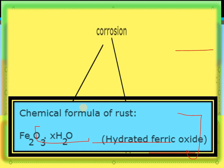What is the rusting formula? The chemical formula of rust — because it is rusting of iron, it will be Fe₂O₃·xH₂O, where x is the number of water molecules combined. Pure metal iron, in the presence of air, water, and oxygen, forms hydrated ferric oxide. This is the formula of rust.